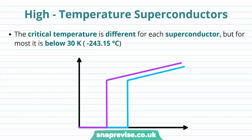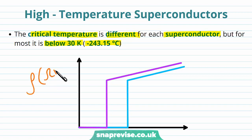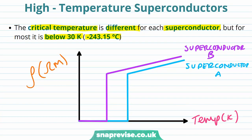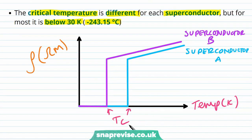Now we look at high-temperature superconductors. The critical temperature is different for each superconductor, but for most it is below 30 Kelvin, or minus 243.15 degrees Celsius. On a graph of resistivity against temperature, two superconductors A and B each have different critical temperatures, and for most metals this critical temperature is below 30 Kelvin — very low temperatures.